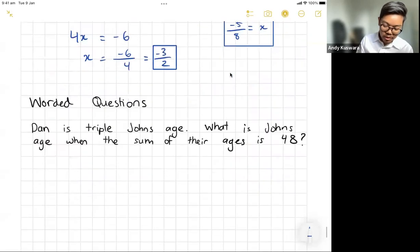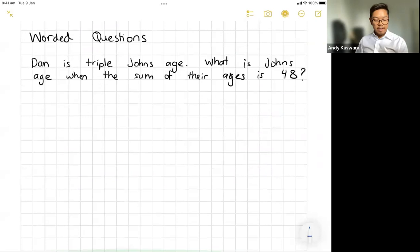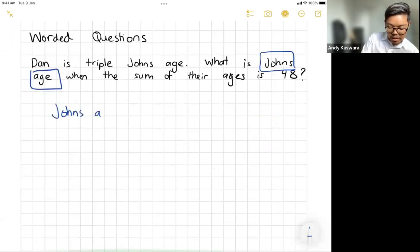One more. Sometimes you will get a worded question, I'll give you an example. Dan is triple John's age, what is John's age when the sum of their ages is 48. Okay, so here's what we need to do, we want to find John's age. So we found out what we don't know, John's age. So what we're going to do is we're going to say, John's age, if we don't know it, I'm going to let that equal to x. Whatever you don't know, label that as your unknown, pick a letter you like and go for it.